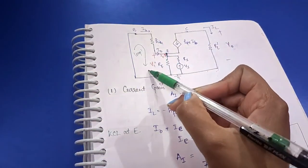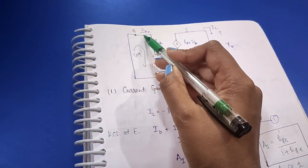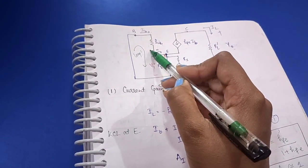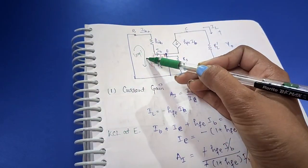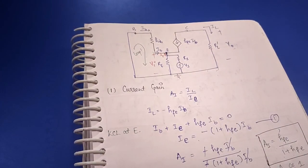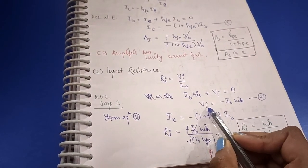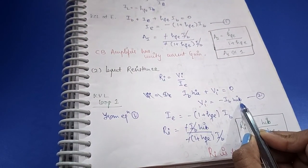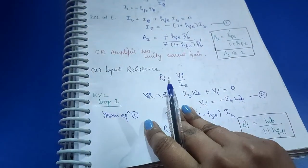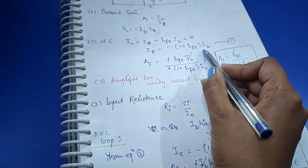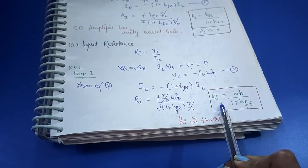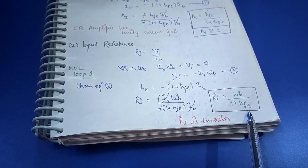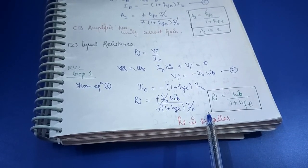Applying KVL in this loop: IB·hIB + VI = 0, so VI = −IB·hIB. We already know that IE = −(1 + HFE)·IB. Substituting and simplifying — IB cancels — we get the input resistance RI = hIB / (1 + HFE). From this we can conclude that the input resistance is small.